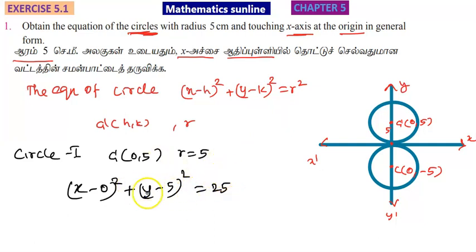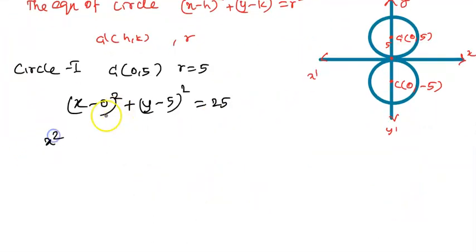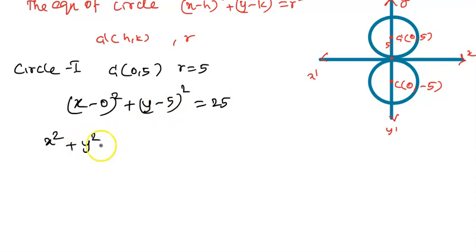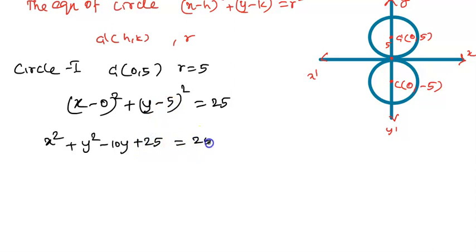Using the expansion formula: a minus b whole square equals a squared minus 2ab plus b squared. So we get x squared plus y squared minus 2 times y times 5, which is minus 10y, plus 5 squared equals 25. This gives us the equation of Circle 1.